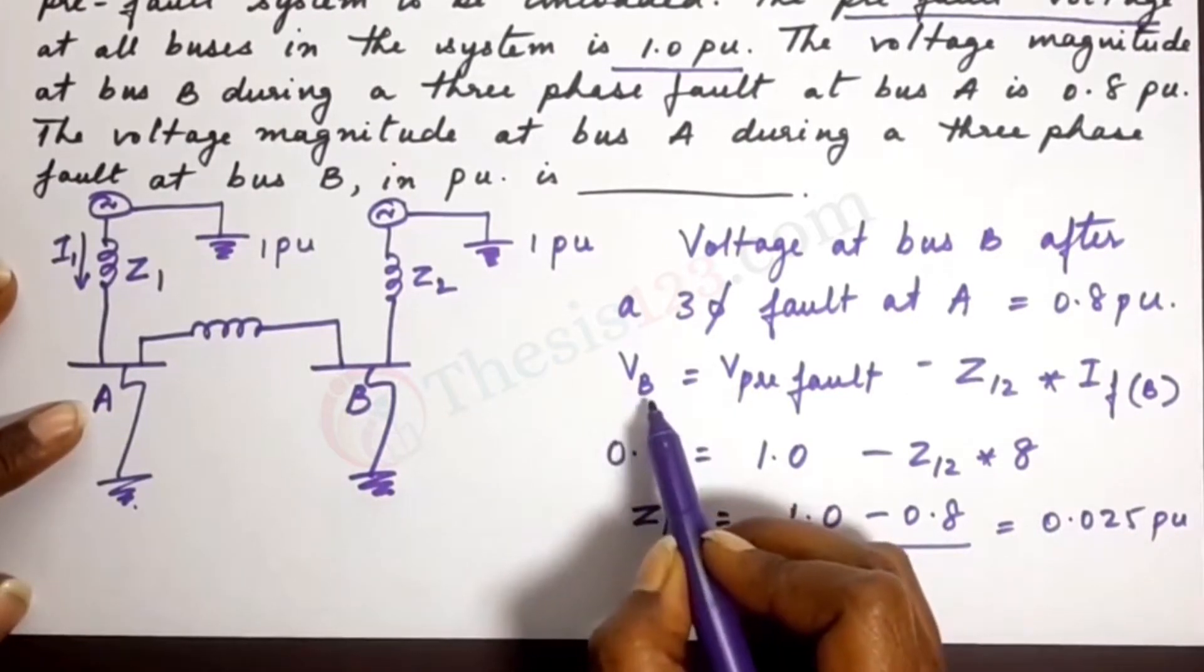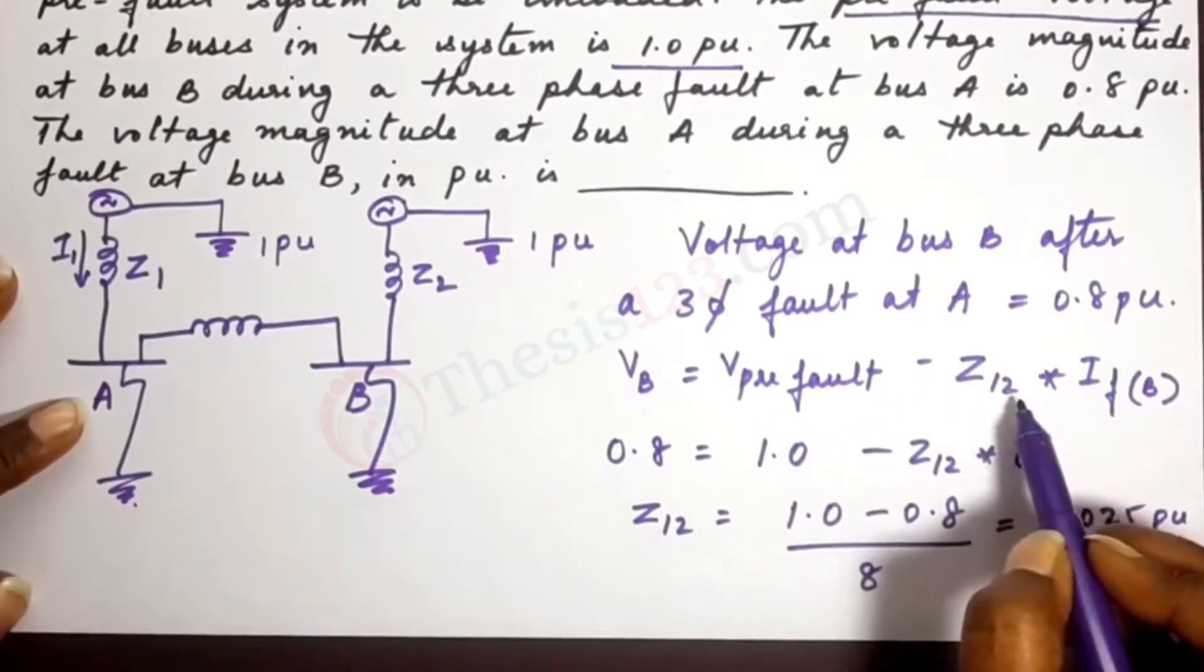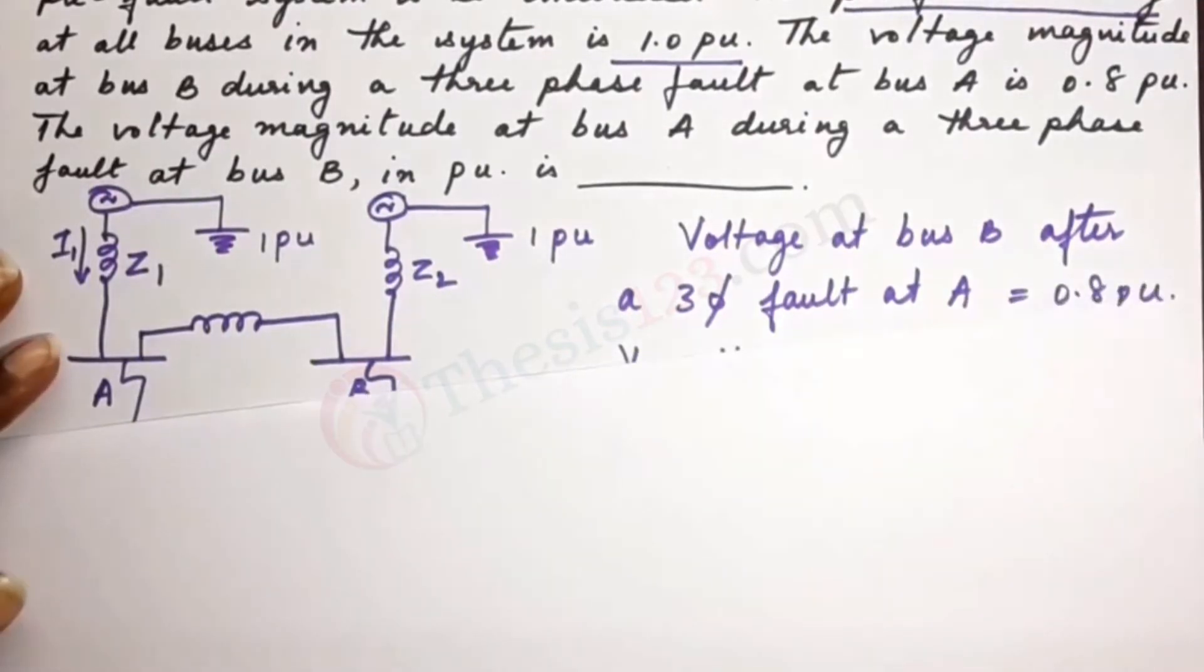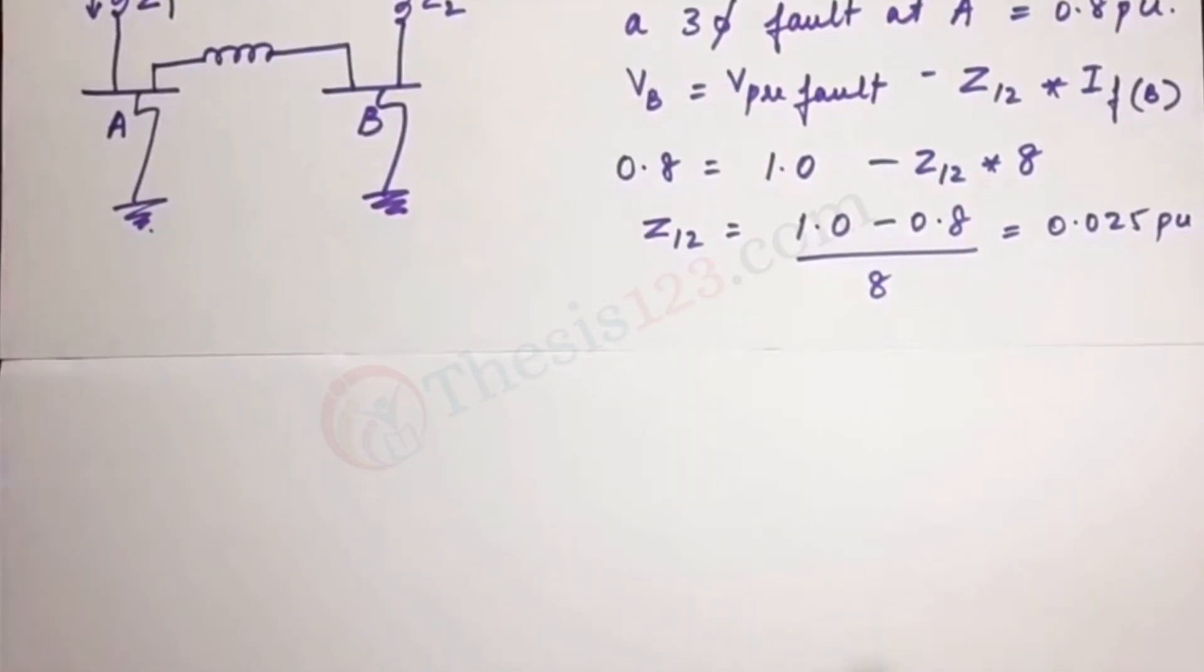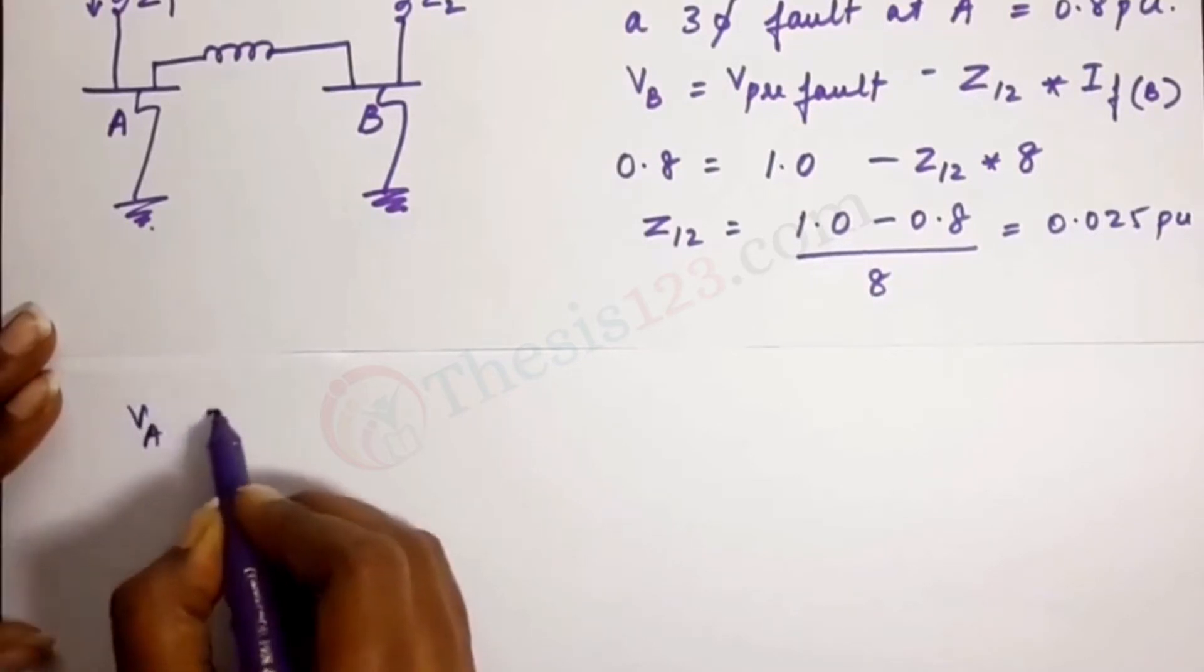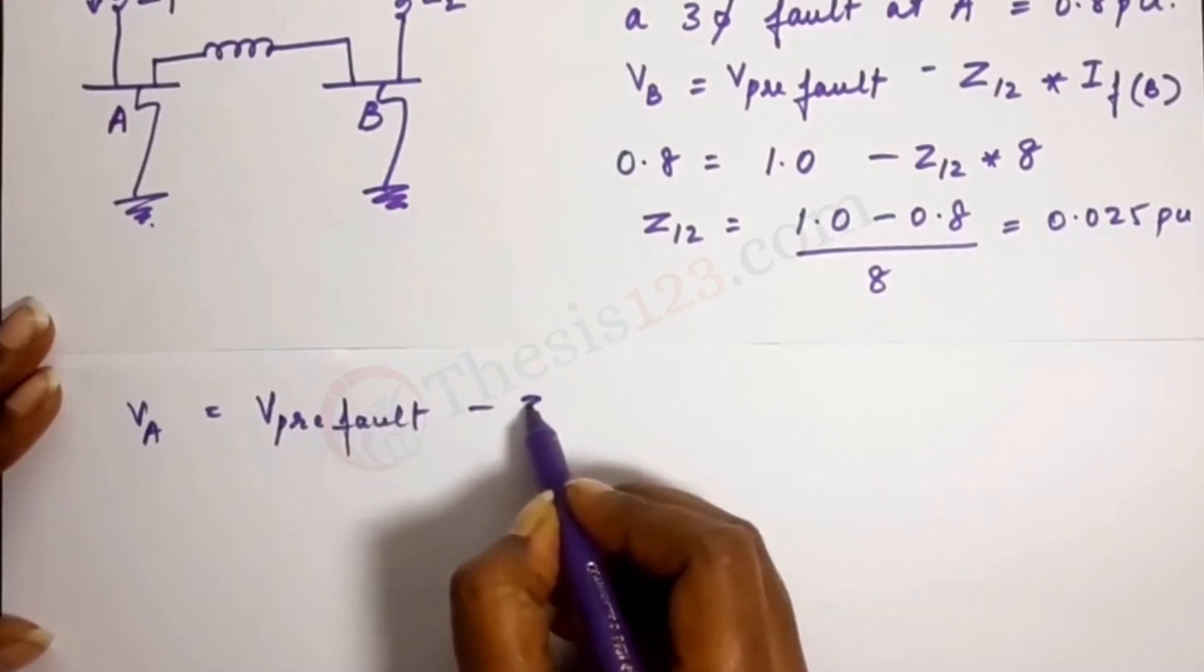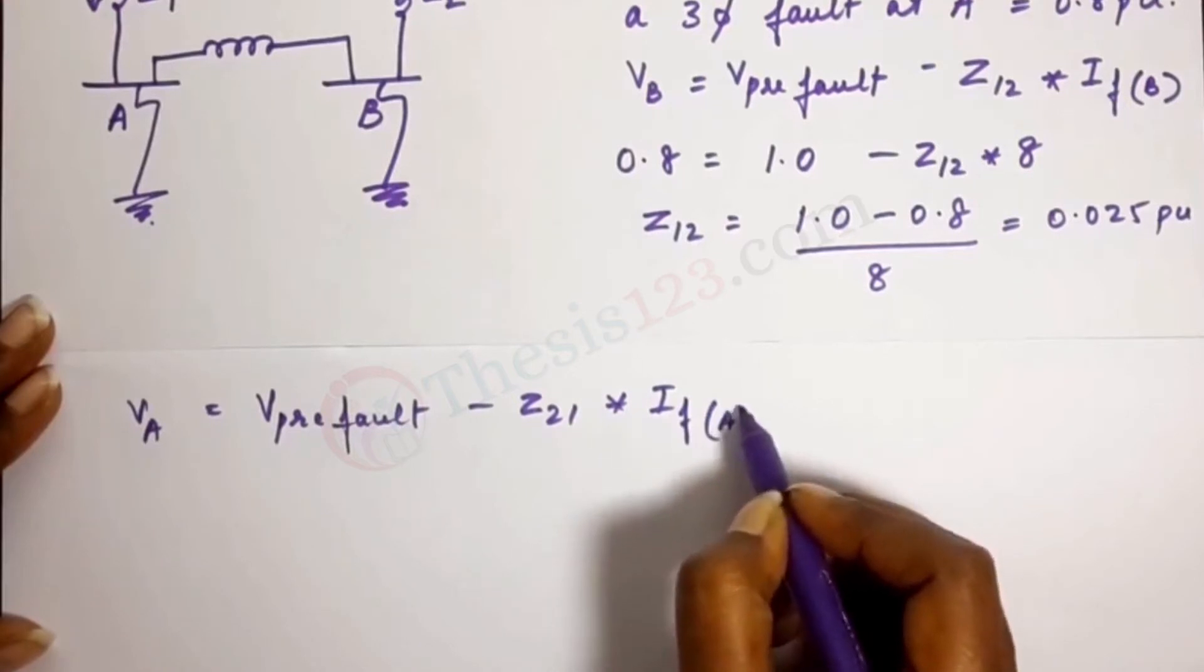So the formula now becomes VA equals V pre-fault minus Z21 times IF of A. Let me just write that here. So we have VA equals V pre-fault minus Z21 into IF of A.